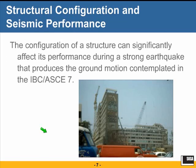The configuration of a structure can significantly affect its performance during a strong earthquake that produces the ground motion contemplated in IBC, ASCE 7. The so-called design earthquake ground motion performance of a structure will very much depend upon its configuration. In the picture, you see the Ministry of Telecommunication after the 1985 Mexico earthquake. The M-shape of the building had a lot to do with what happened to the structure, and so did the height of the structure, which is part of our configuration.